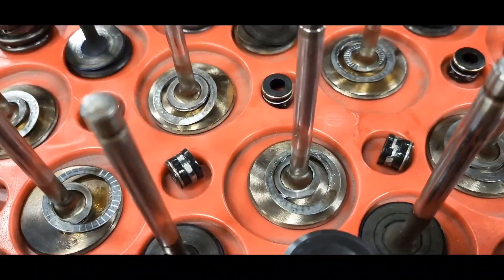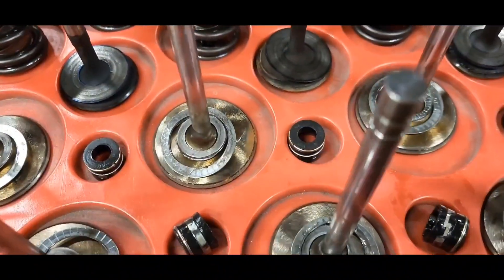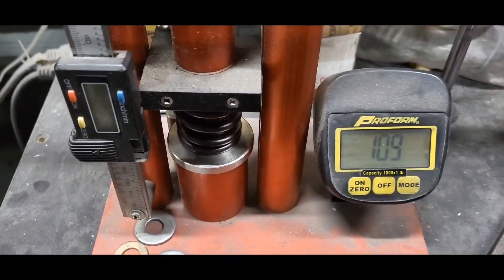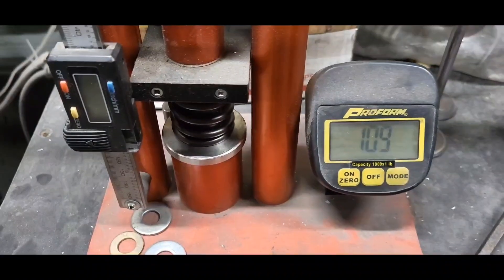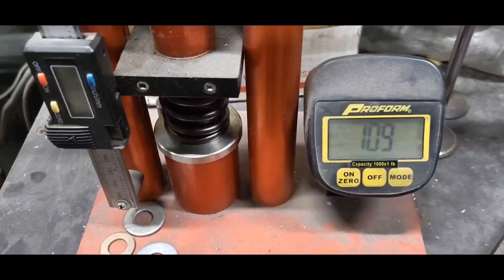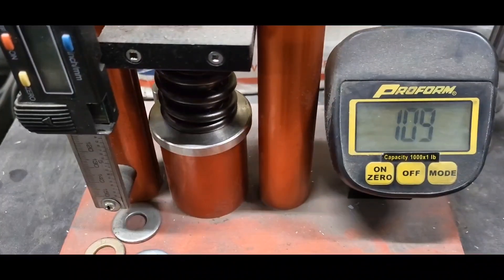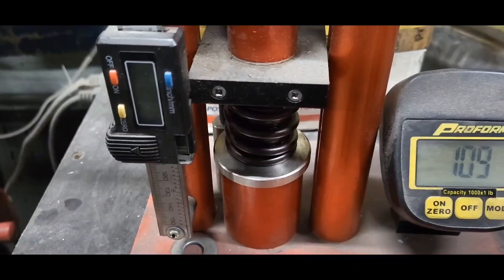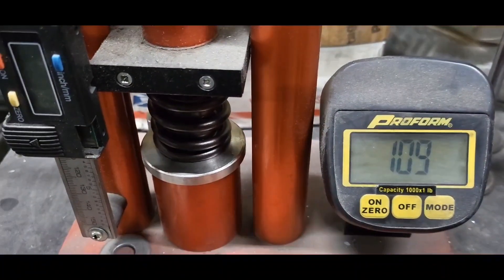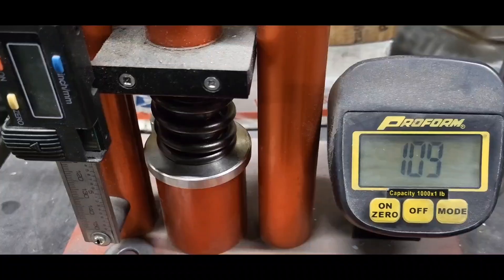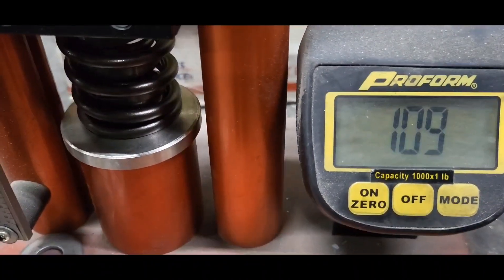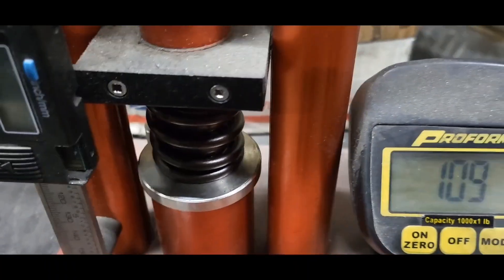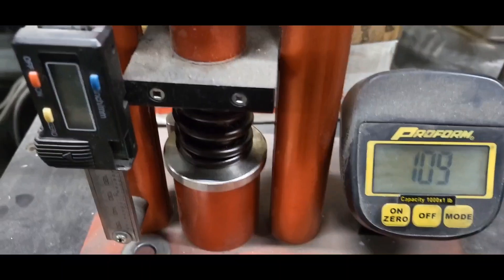So Lamont just set up that spring the way it was from install height on that cylinder head. And the inner spring, the reason why those spring shims were cut in half is because the inner spring was bouncing around. It wasn't sitting on anything. And this is the seat pressure: 109 pounds on the install height.